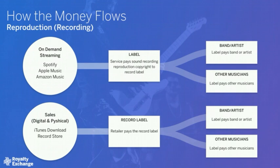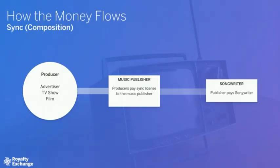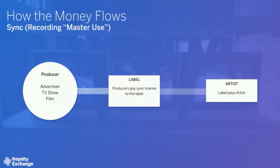For the sound recording, the reproduction royalties are more straightforward. Both on-demand streaming services and retailers pay the label, and the label pays the artist and supporting artists per their contract — artist cuts can vary widely from 12% to 50% or more, depending on the deal and the stature of the artist. Sync licenses are also pretty simple: the producer pays the sync license to the music publisher, who then pays the songwriter. And if they're using a master recording, the same people pay the master use license to the record label, who then pays the artist.